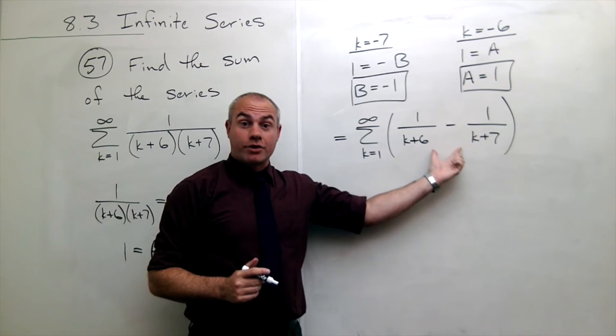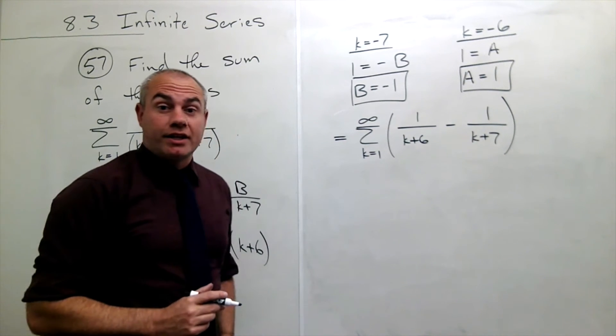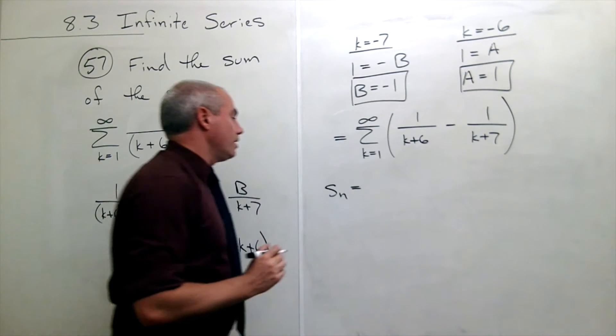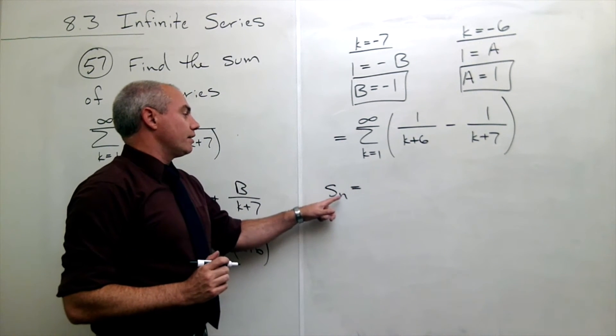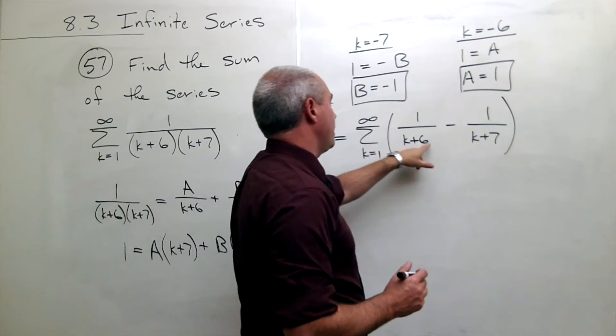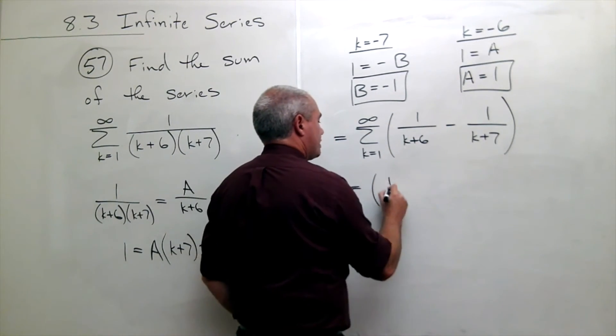This I can find the nth partial sum of. So let's look at the nth partial sum of that guy. Let's look at s sub n. And if I look at when k is 1, what do I get? I get 1 over 1 plus 6 which is 1/7.